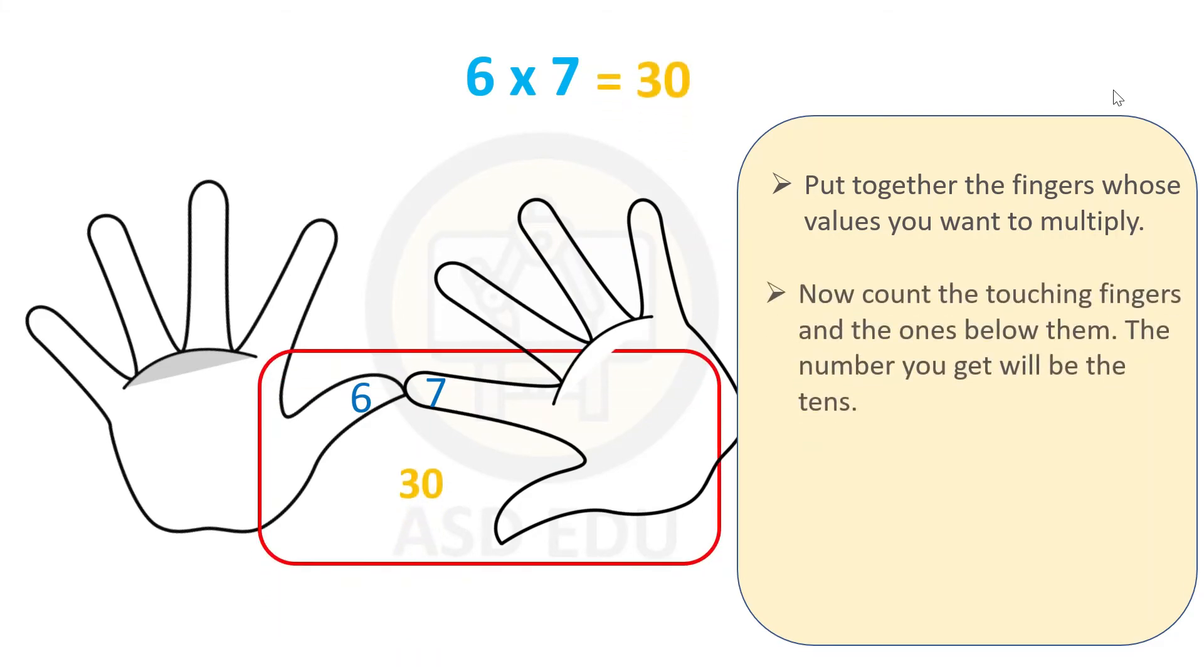Then count the touching fingers and the ones below them. We have 1 finger on the left hand and 2 fingers on the right hand. This becomes 30.